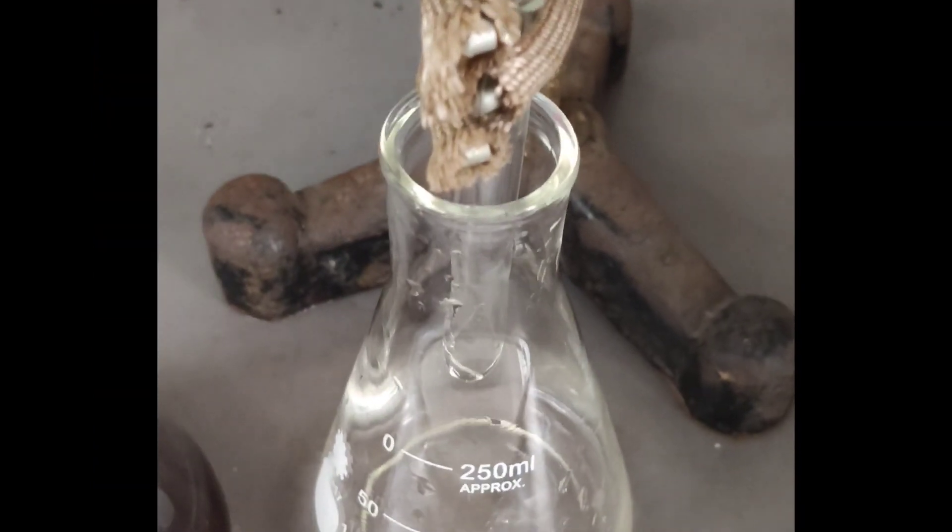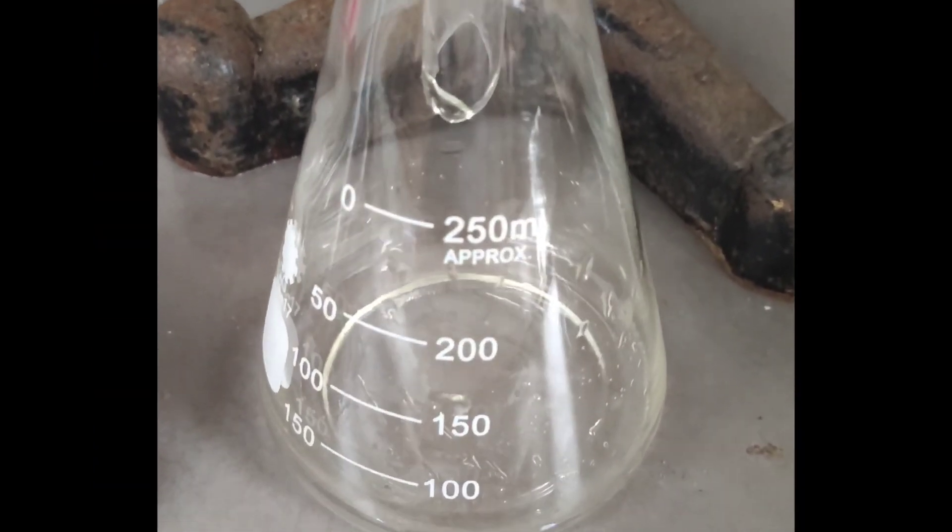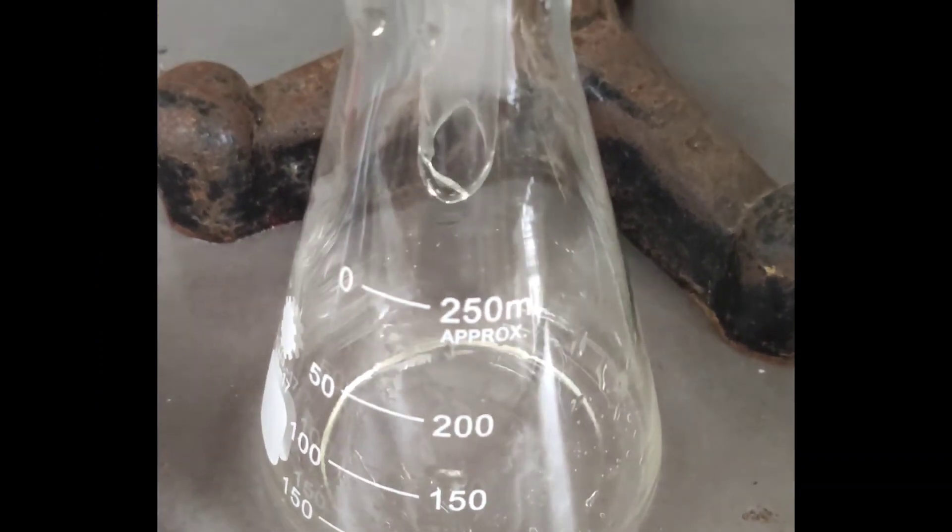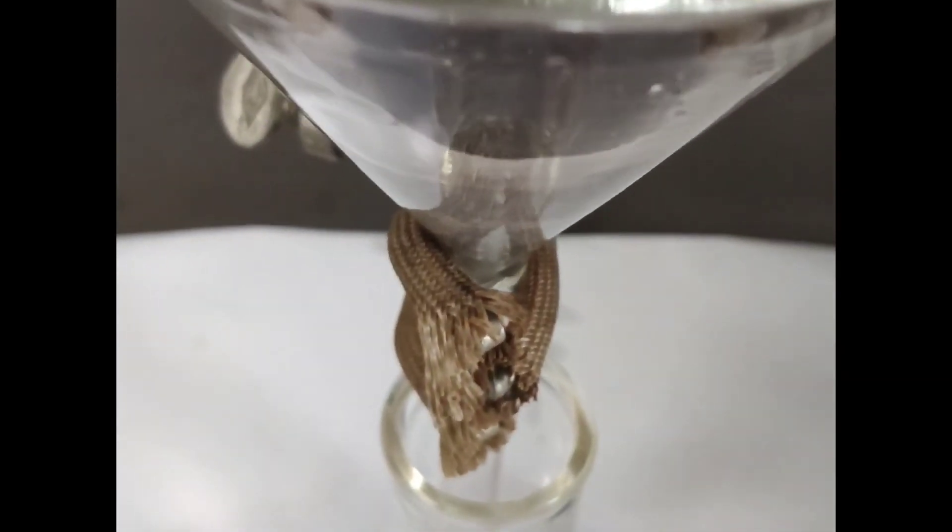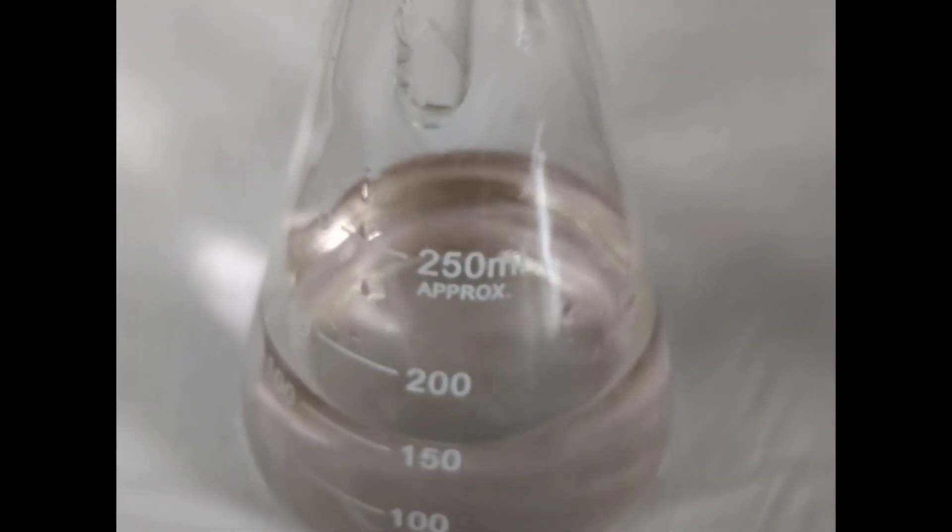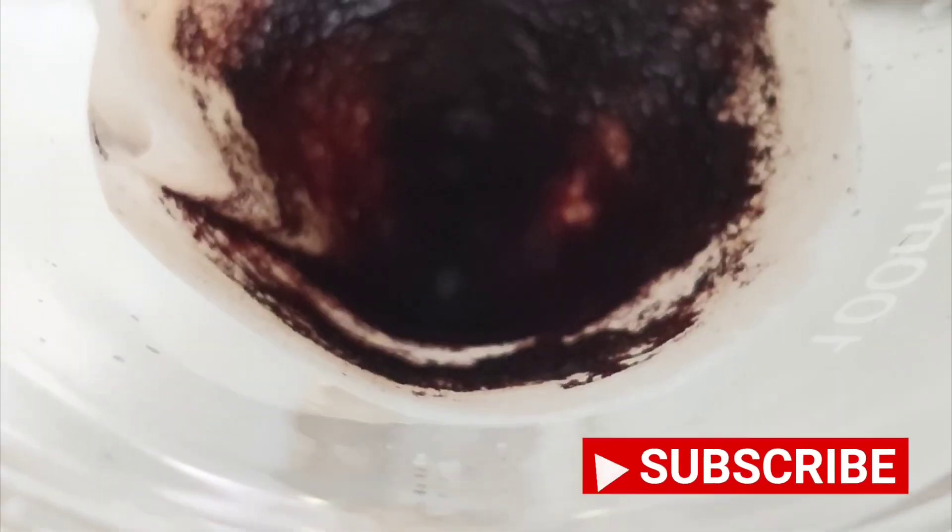We see that the filtrate is clear. No corrole has gone through. We wash the precipitate with water and we see that the filtrate has a slight pink color due to the excess cobalt which is dissolved in the water.